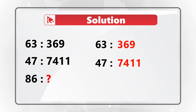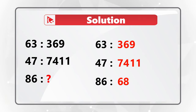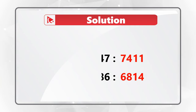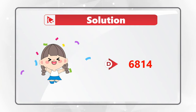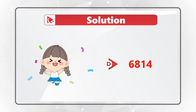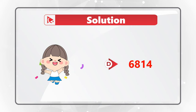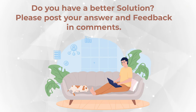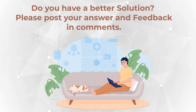So to get to the correct solution for 86, we need to swap 6 and 8, and then add 8 plus 6, which equals 14. So the correct answer here is choice D: 6814. Hopefully you've nailed this question, enjoyed this solution, and now know how to answer similar problems on the test.